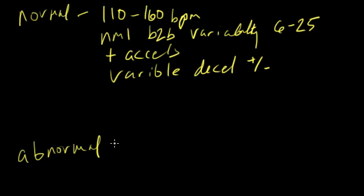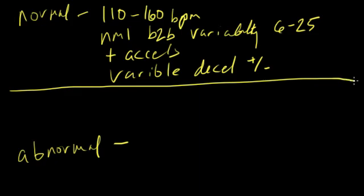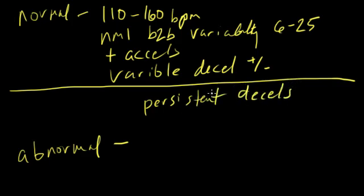So abnormal, on the other end of the spectrum, is persistent decels. So what is a persistent decel? We said a persistent decel is a decel in which, I'm sorry, this should be persistent late decels. That's important.